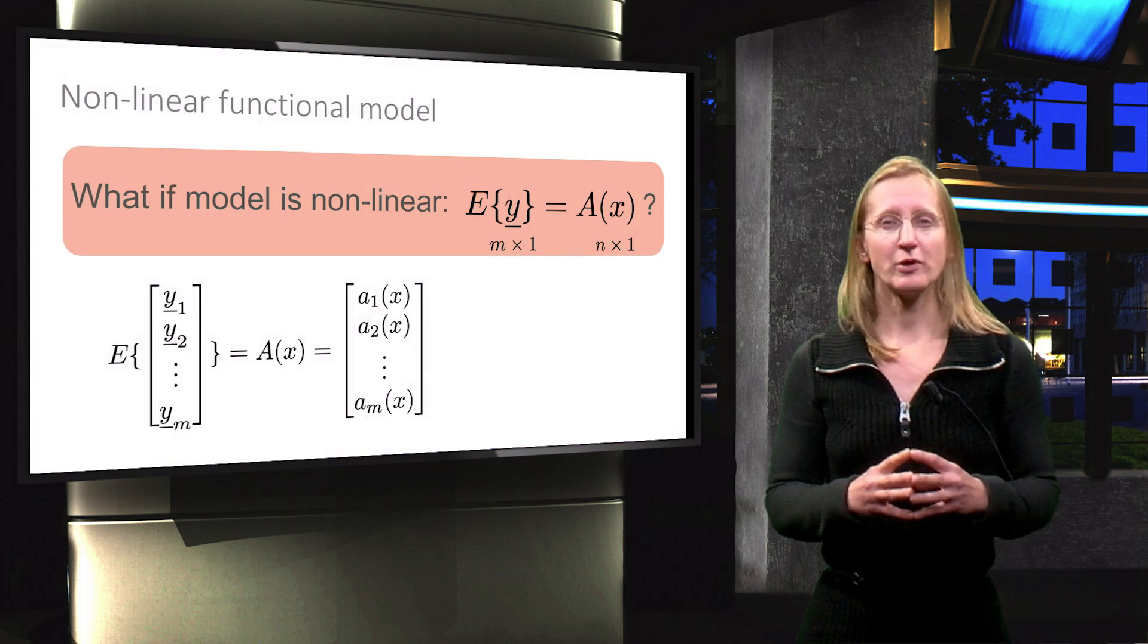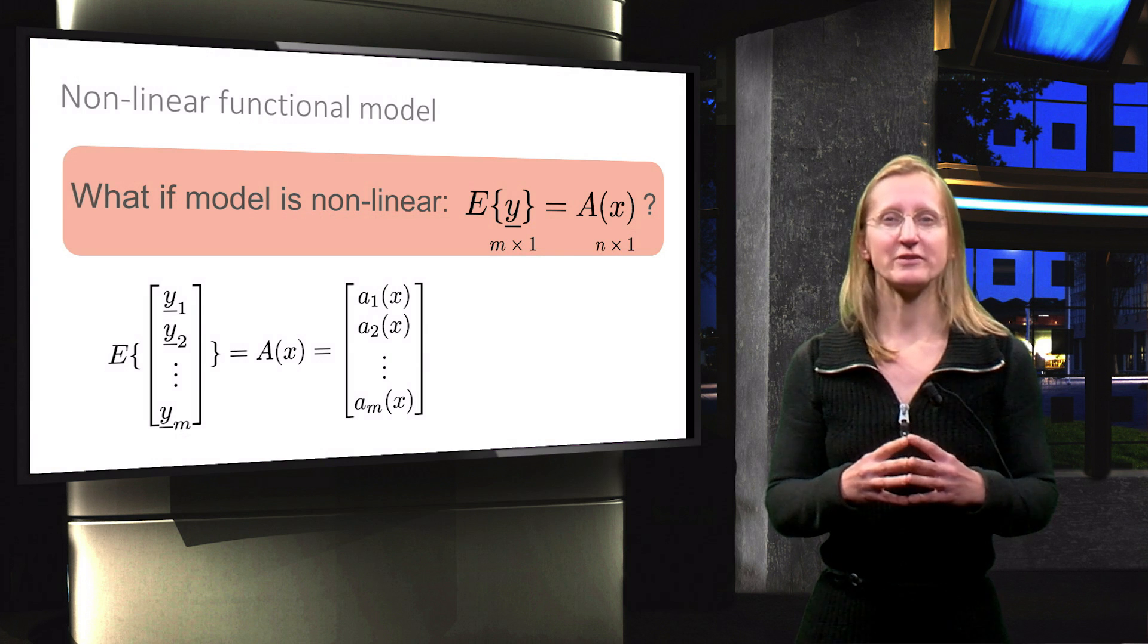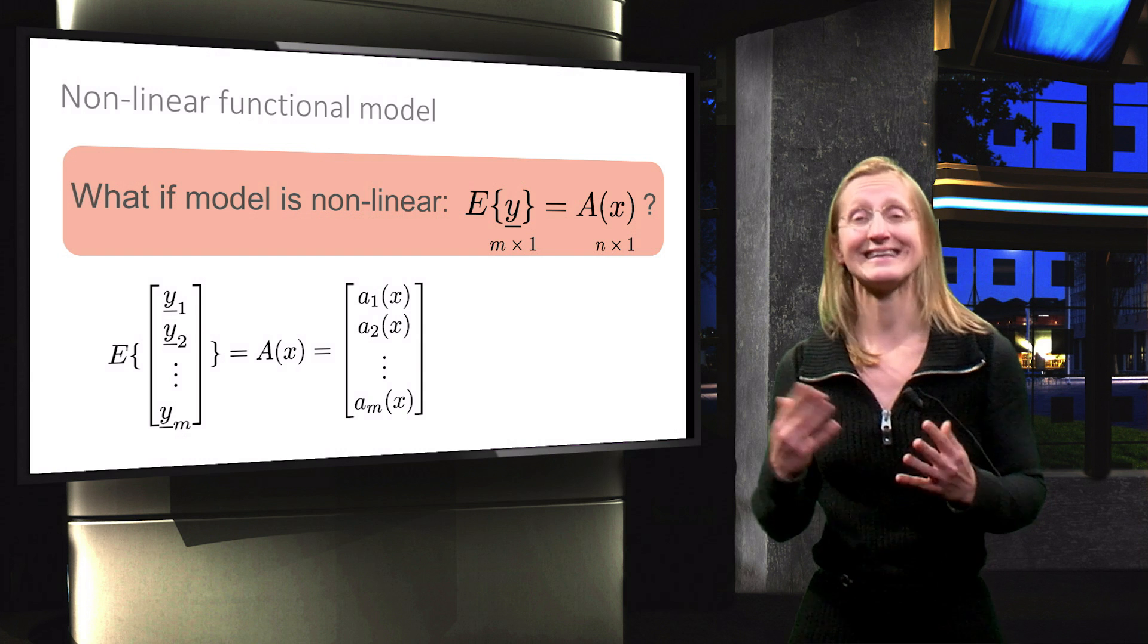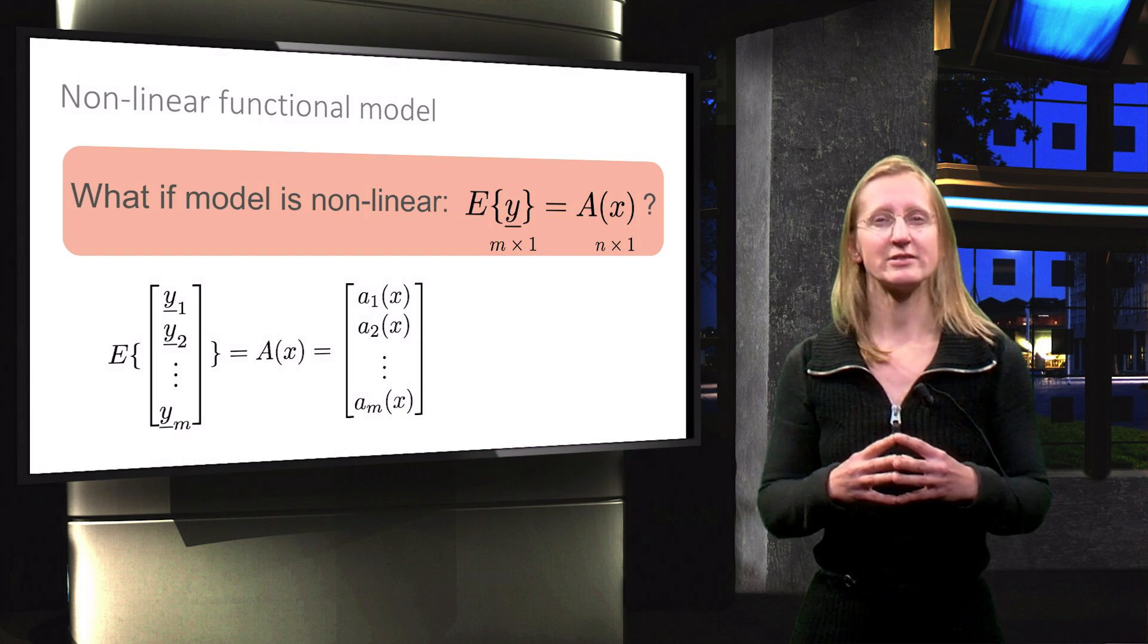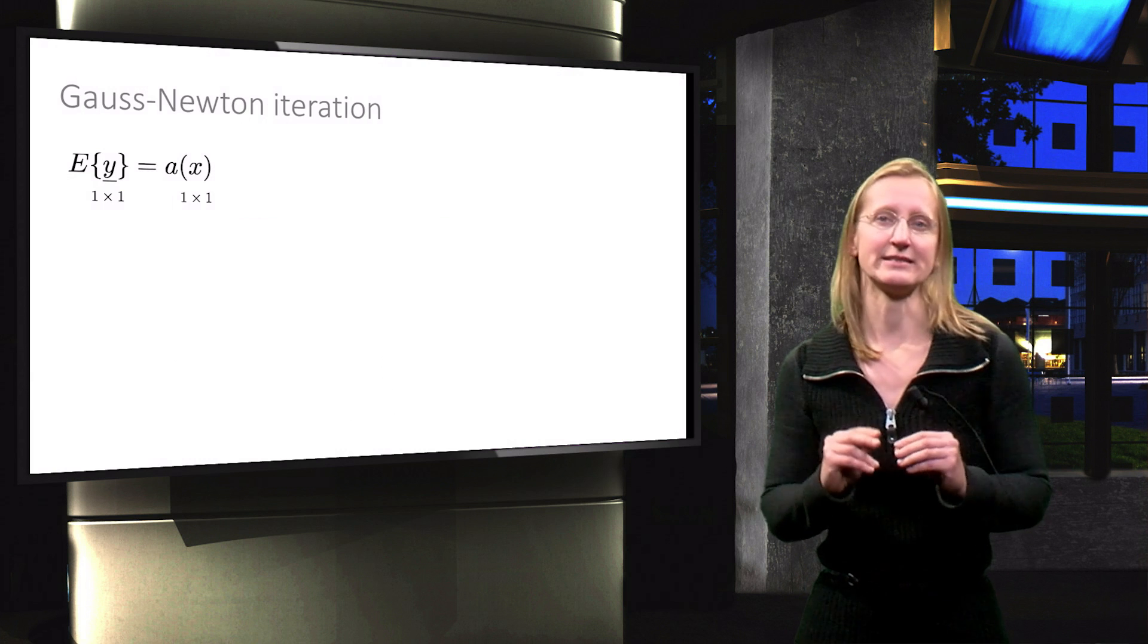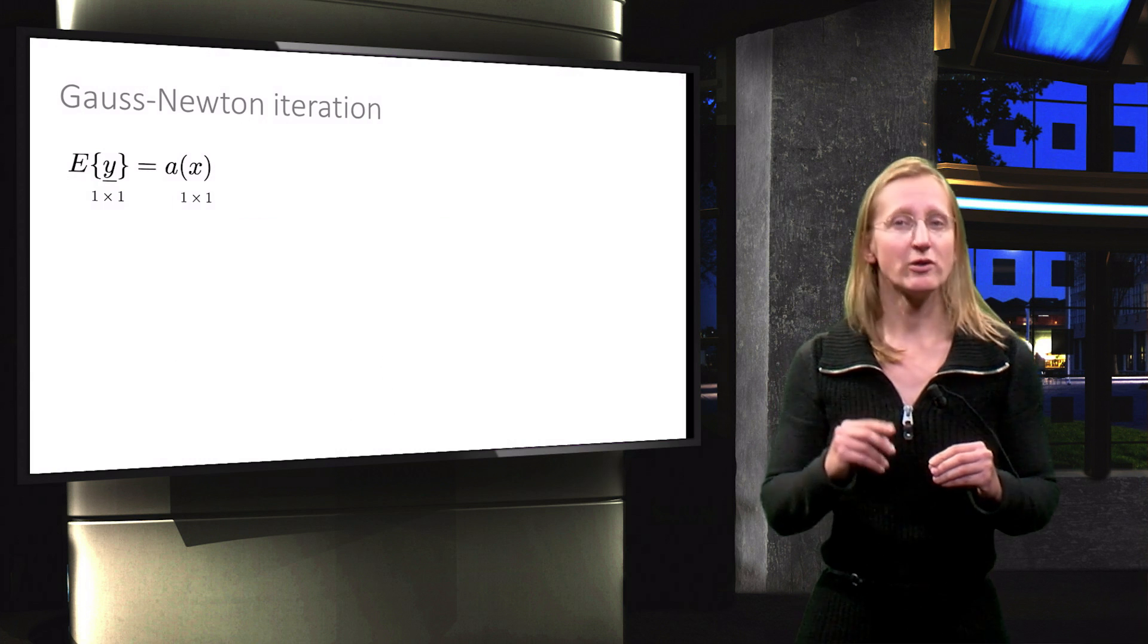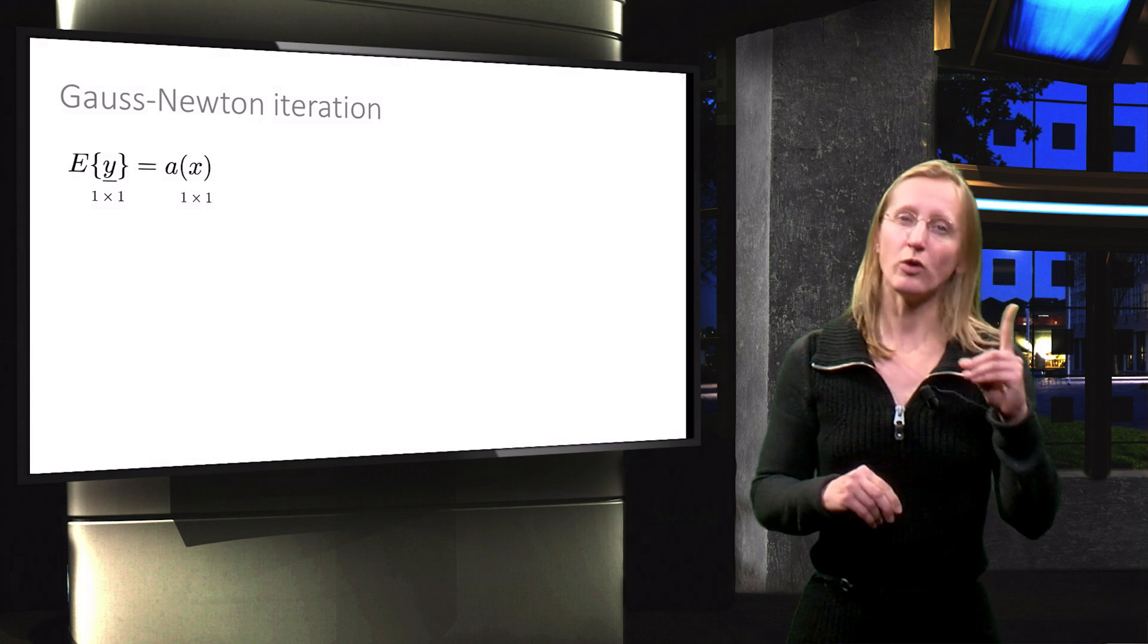So we are looking at the problem where the m observations have a non-linear relation with the unknown parameters in x. In a previous lecture the principle of non-linear estimation was introduced based on the scalar case. This means we only have one observable and one unknown.